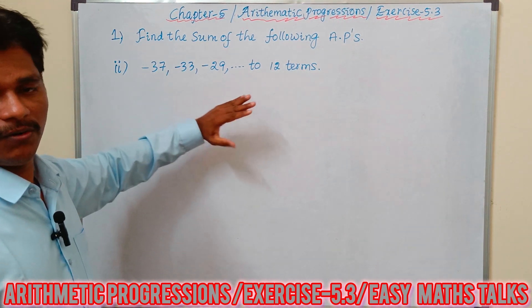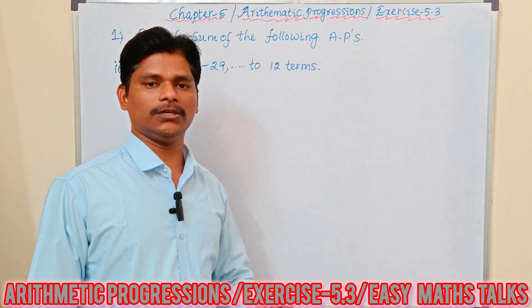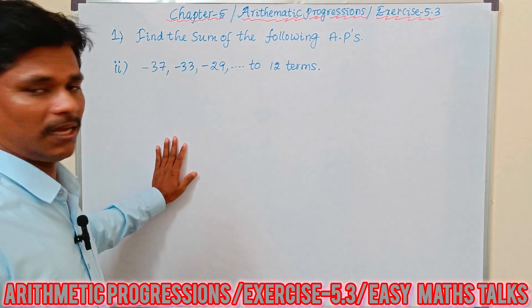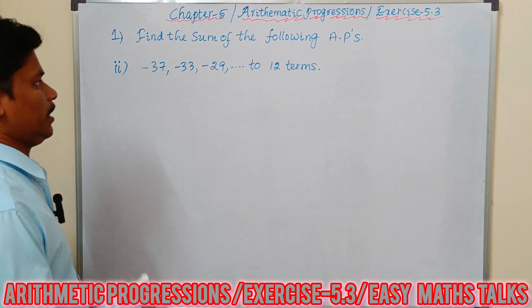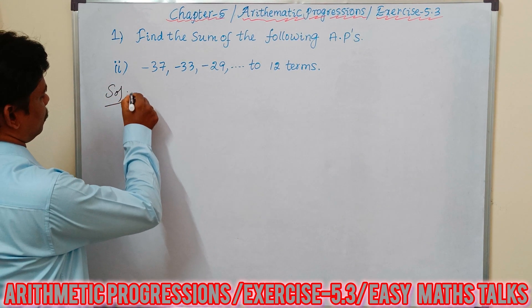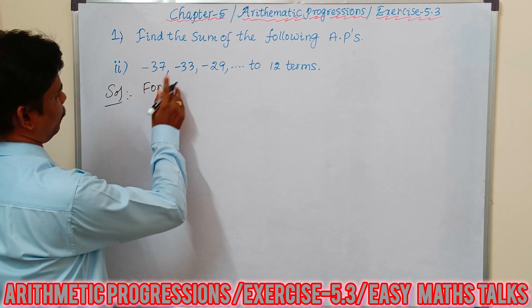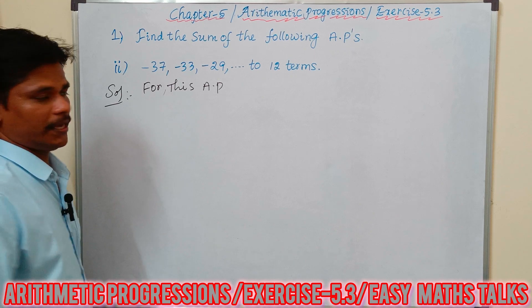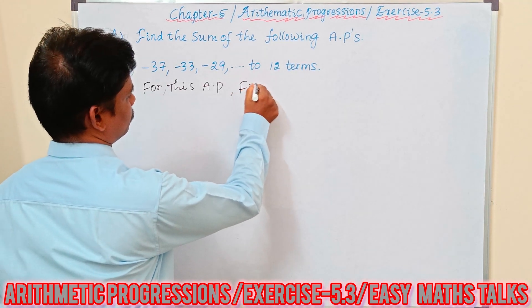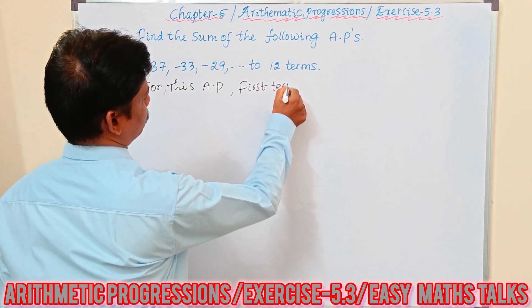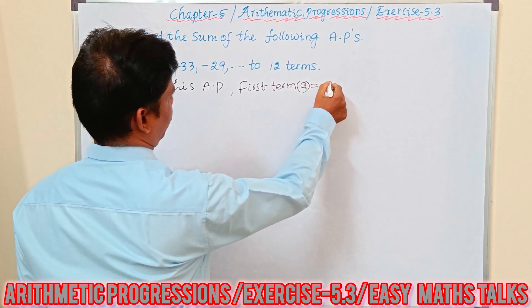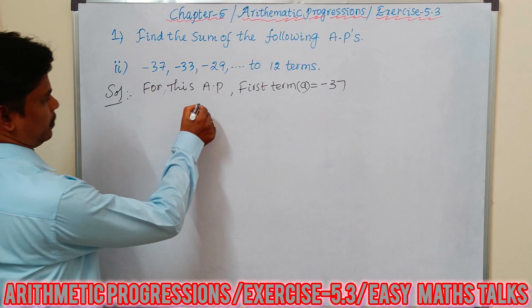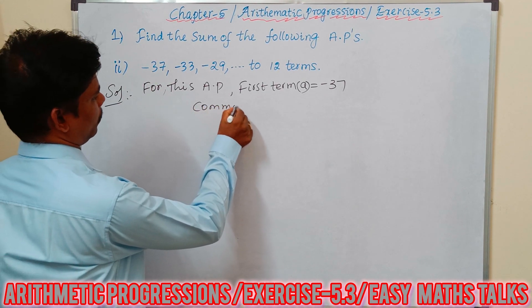We know the formula: Sn = n/2 × (2a + (n−1)×d). For this AP, the first term a is given as −37.